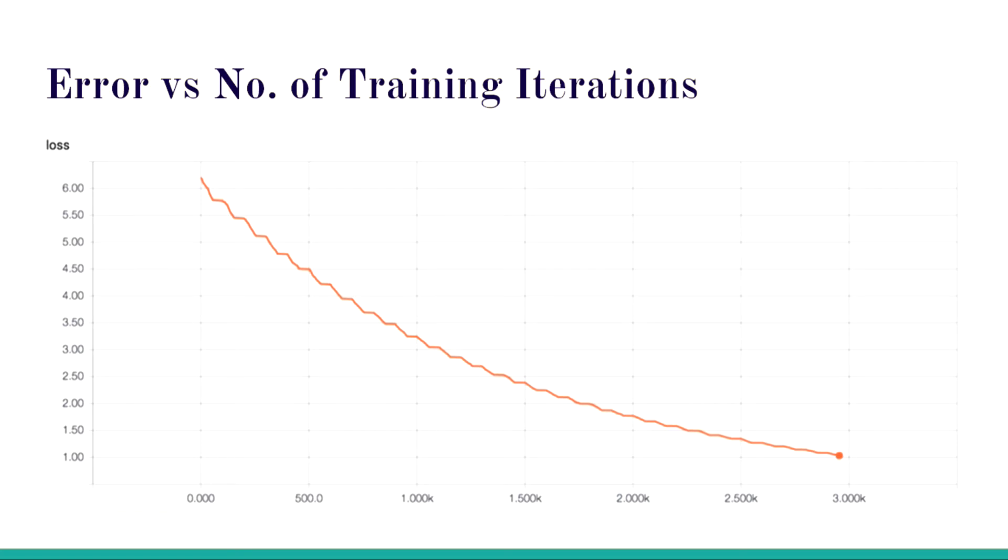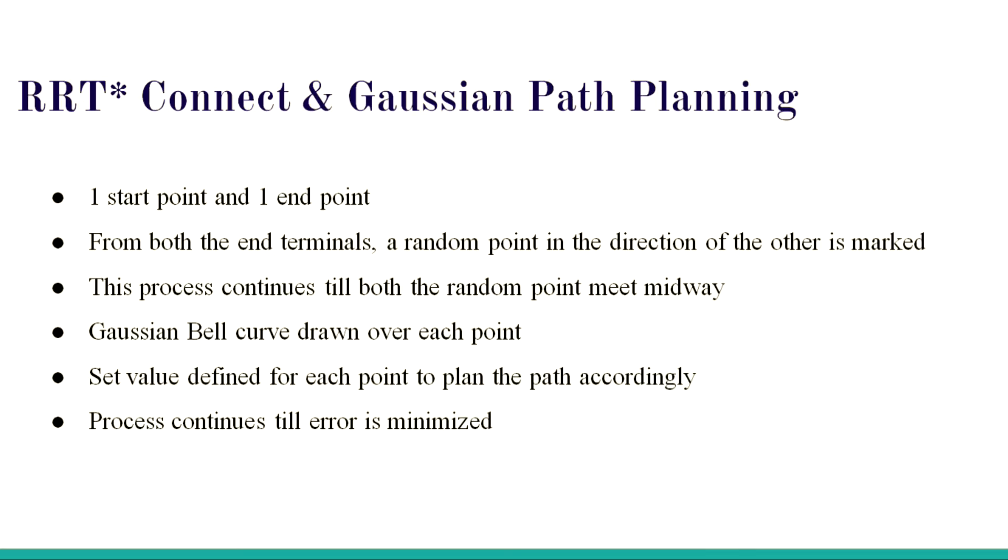This is a graph of error versus training iterations. The model was run continuously. As you see, it's a decreasing curve. Every time the model gets the error, it corrects the error, it trains back and the error is reduced.